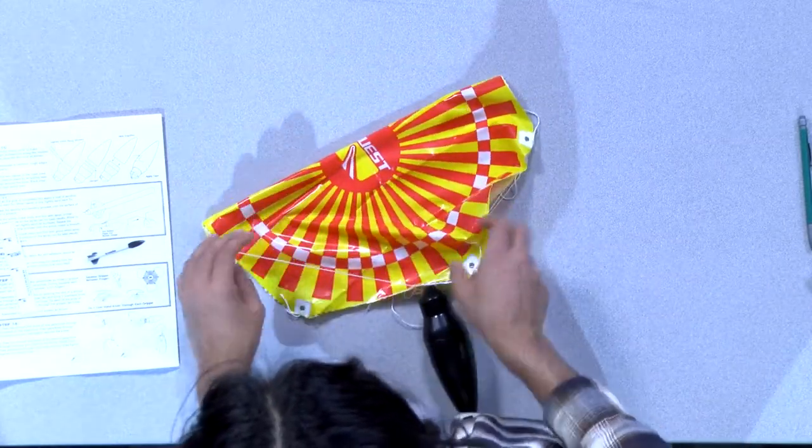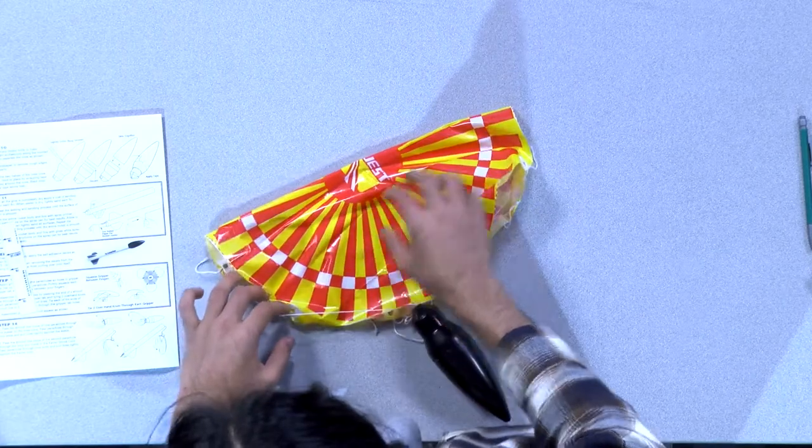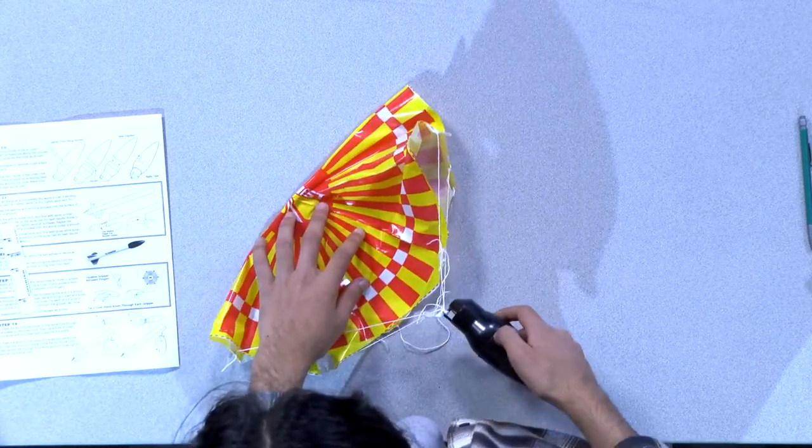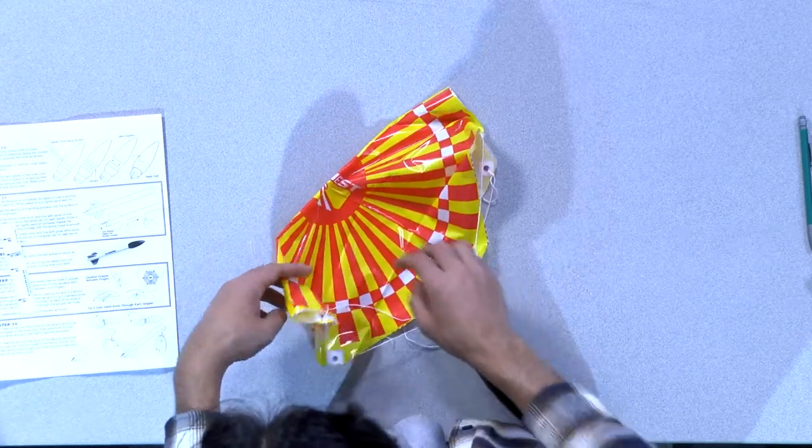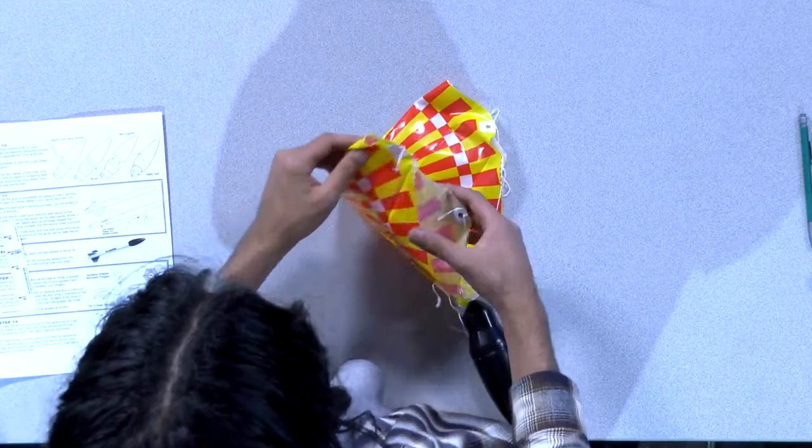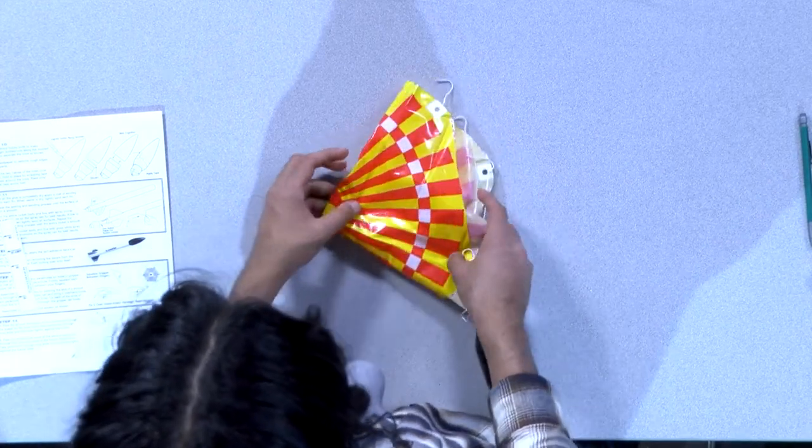Now that you've tied your nose cone to the parachute, fold the parachute in half. Fold this half in half once more so that it occupies the same area as a quarter of the entire parachute.